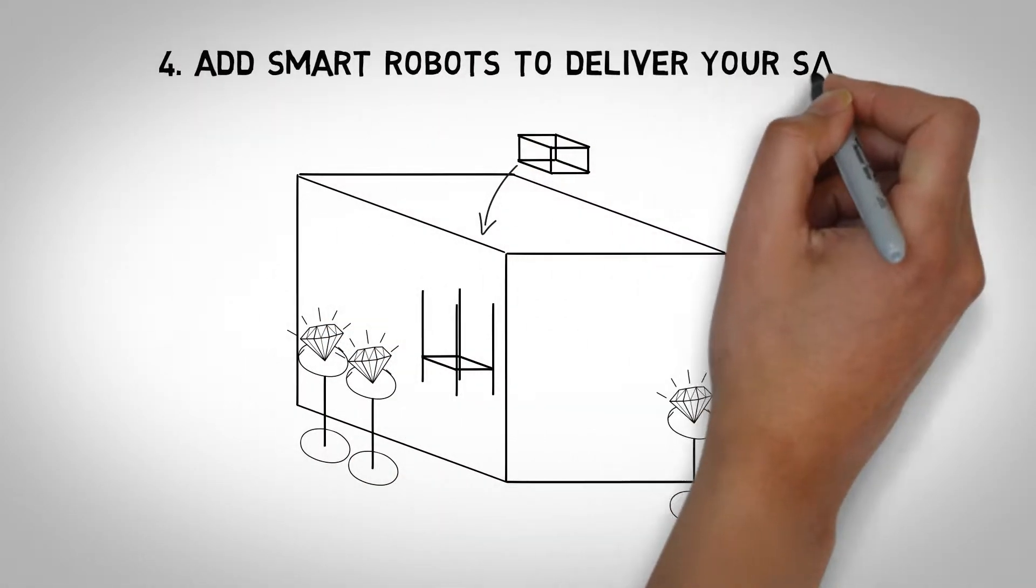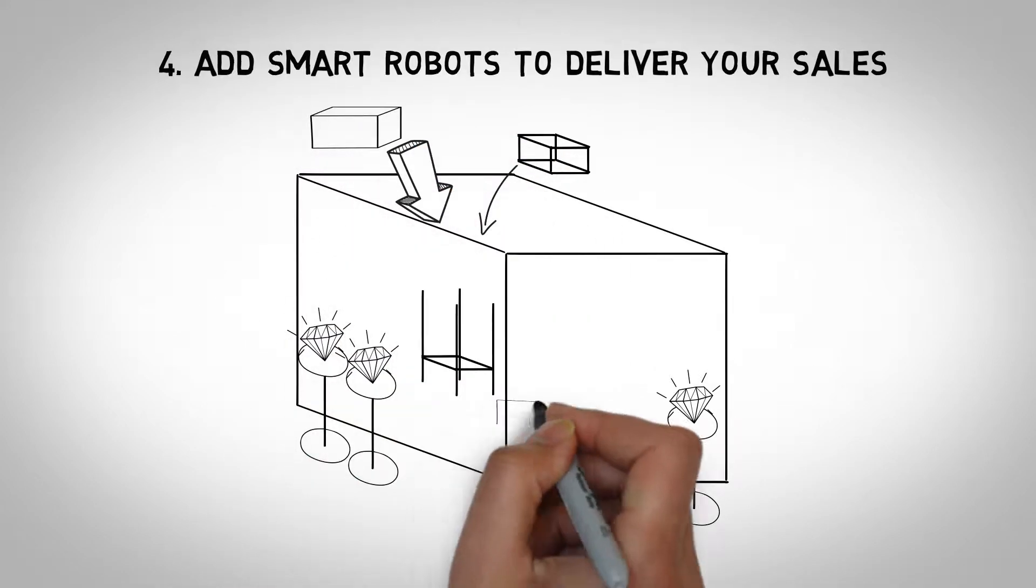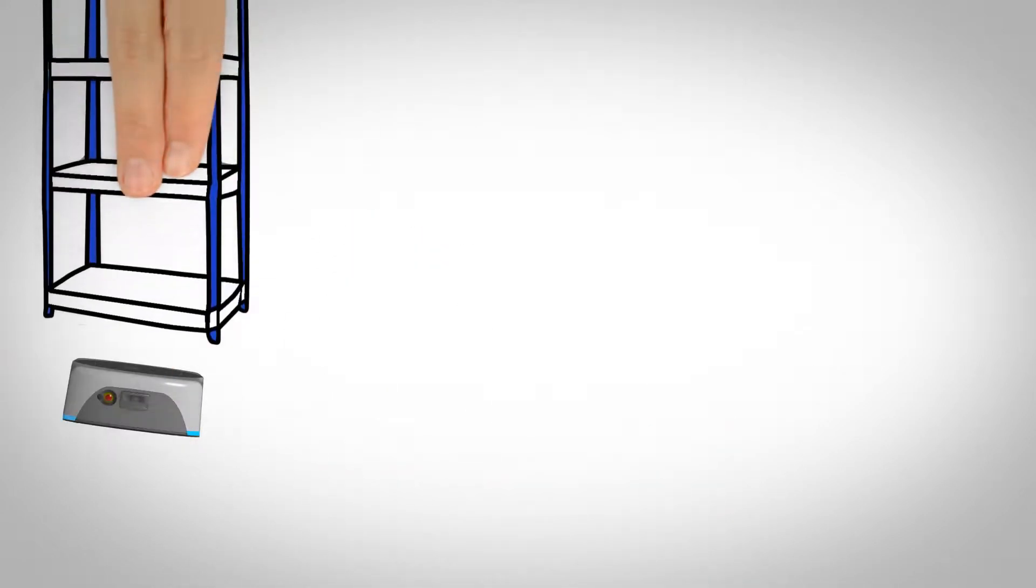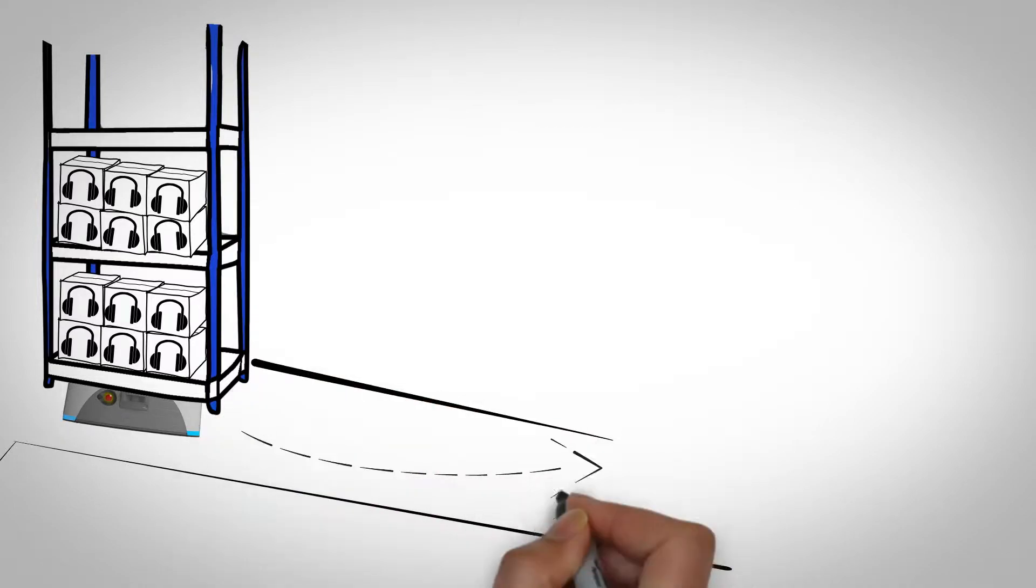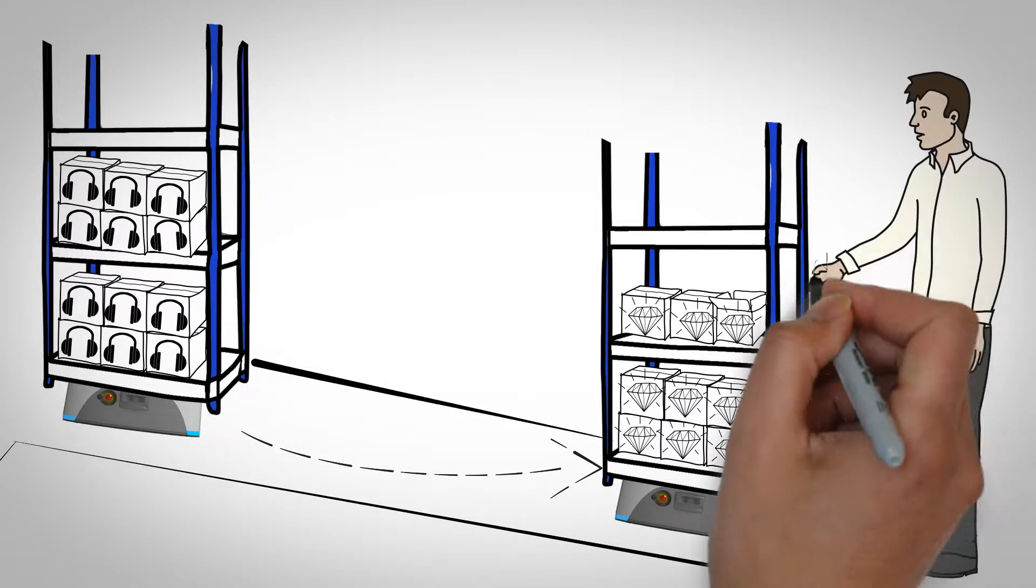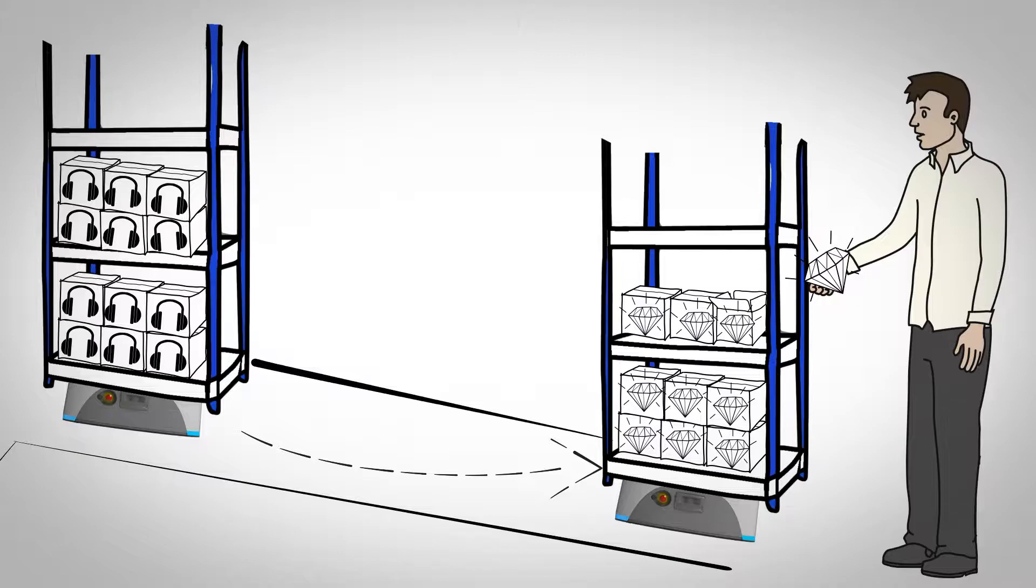4. Add smart robots to deliver your sales. When payment is made, they turn to the collection point and get their item. Voila! Like I said, just like a vending machine.